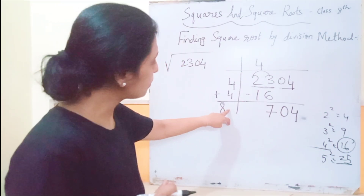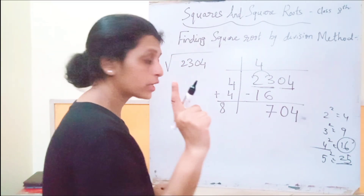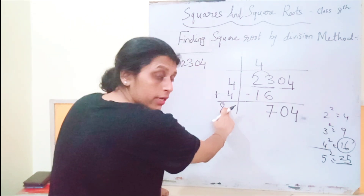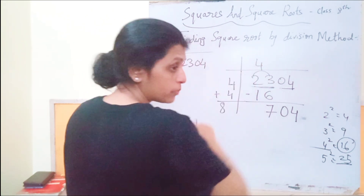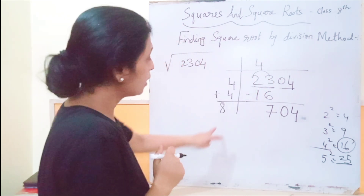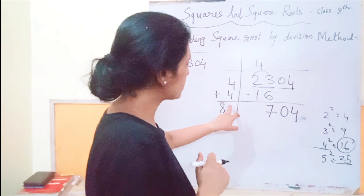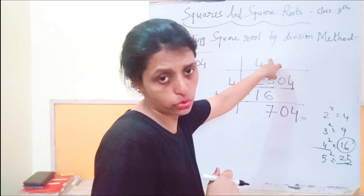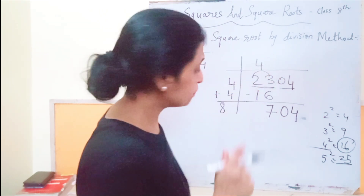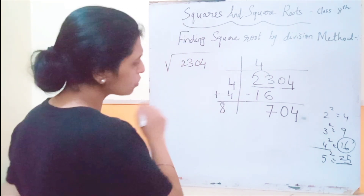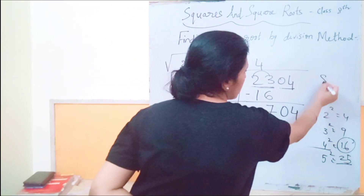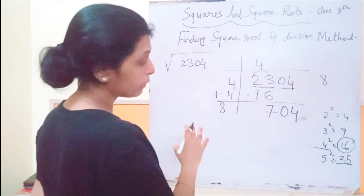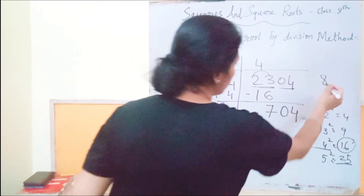We need to place a digit next to 8 — always remember that the digit you write there, you have to multiply that same digit with the full number. Always keep track: the digit you place next to 8 is what you multiply by.